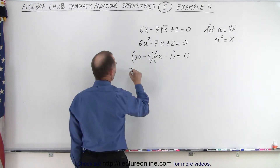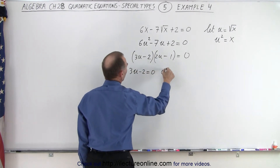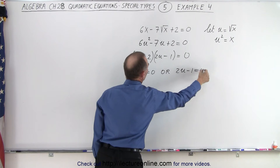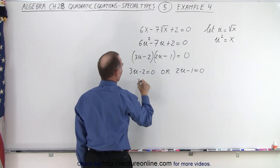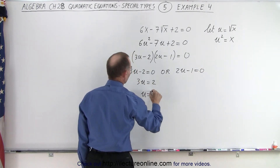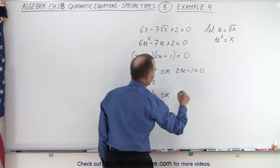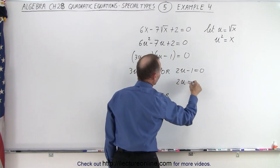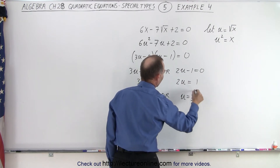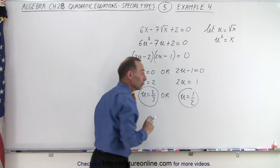That means we have 3u minus 2 equals 0, or 2u minus 1 equals 0. From the first, 3u equals 2, so u equals 2 thirds. From the second, 2u equals 1, so u equals 1 half. These are the two possible solutions for u.